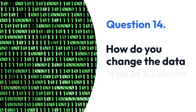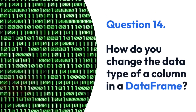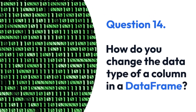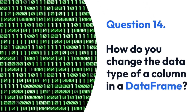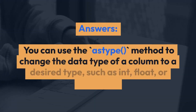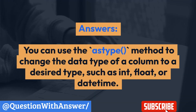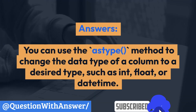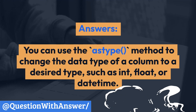Question 14: How do you change the data type of a column in a DataFrame? You can use the astype() method to change the data type of a column to a desired type, such as int, float, or datetime.